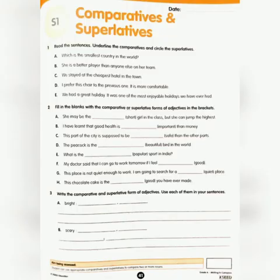Now take out your S1 at page number 41. Read the sentences, underline the comparatives, and circle the superlatives. 'Which is the smallest country in the world?' — 'smallest' is superlative, circle it. 'She is a better player than anyone else on her team' — 'better' is comparative, the second degree of good, so underline it.